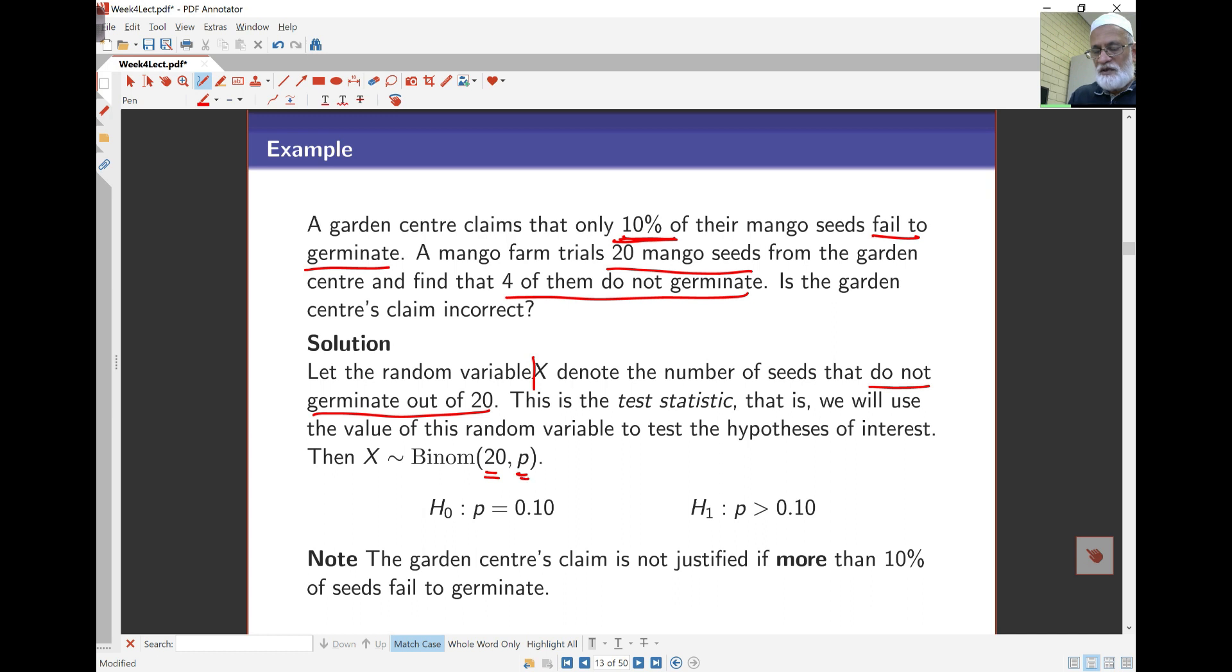For the hypothesis test, the null hypothesis is the same as the claim. The null hypothesis means no change—we start by believing what the garden center claims. The alternative is that the claim is understated, which means that more than 10% of the mango seeds fail to germinate.